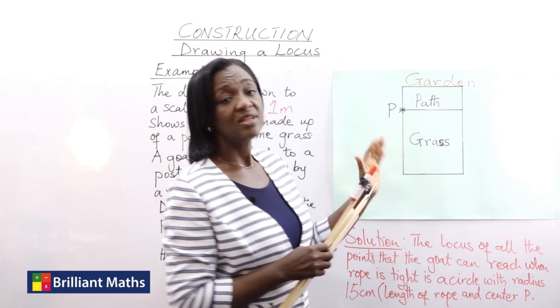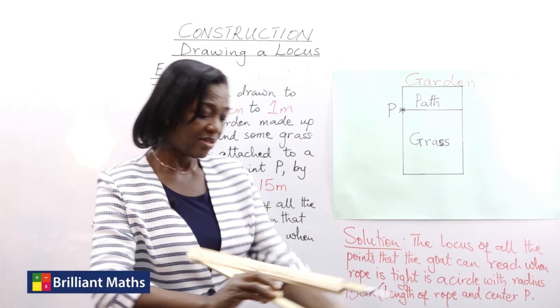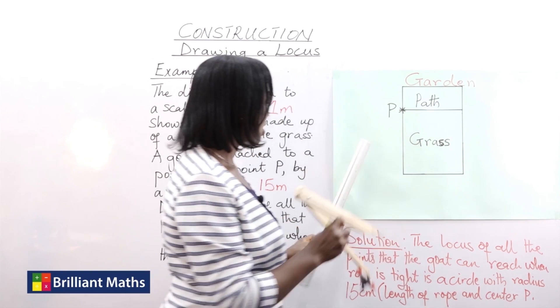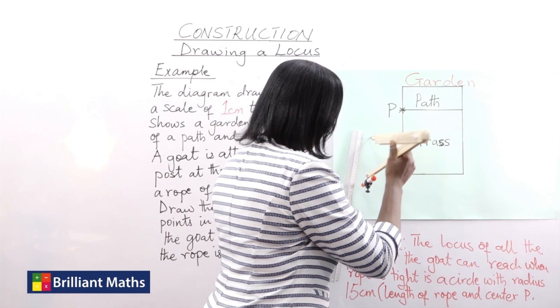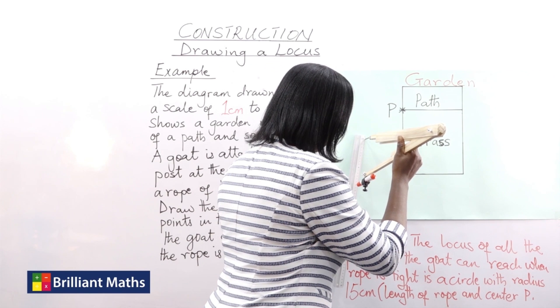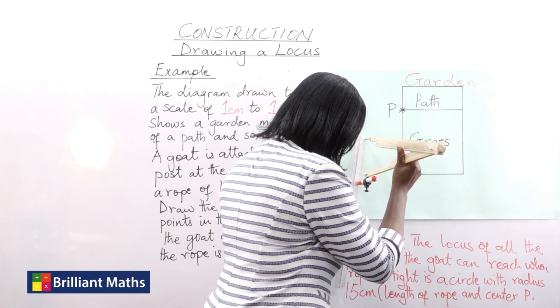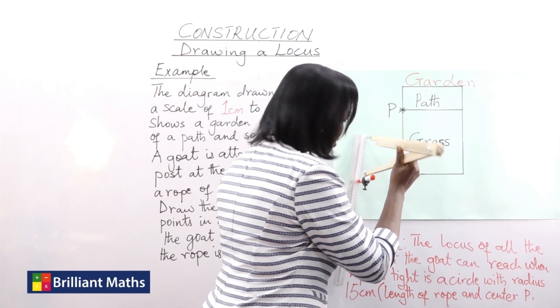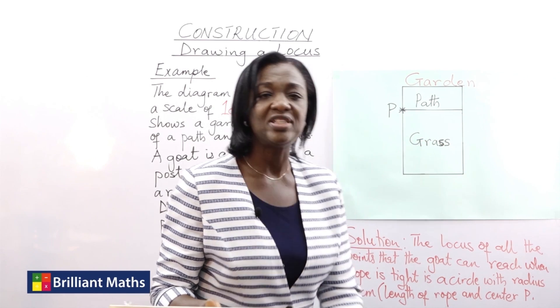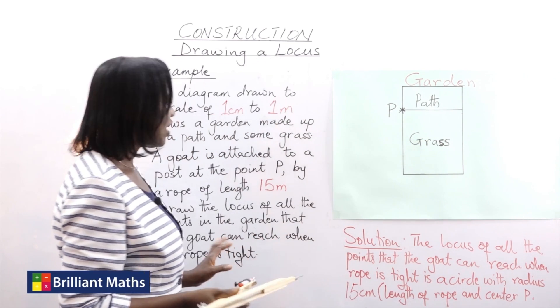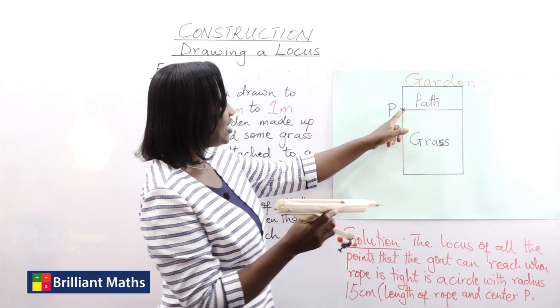So we open up our pair of compasses to 15 centimeters. So you take your ruler and check 15 centimeters. How do we determine the locus of that point?